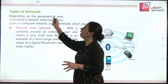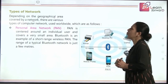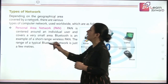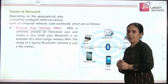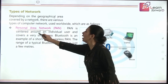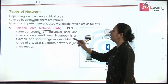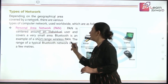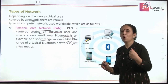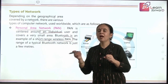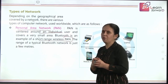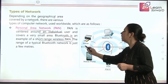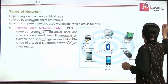Depending on the geographical area covered by the network, there are various types of computer networks used worldwide. The first one is Personal Area Network (PAN). It is centered around the individual user and covers a very small area. Bluetooth is an example of the short-range wireless PAN. When you turn on the Bluetooth of your mobile or TV, it covers a certain area and gets connected with other hardware devices around it, having a range of only 10 meters.